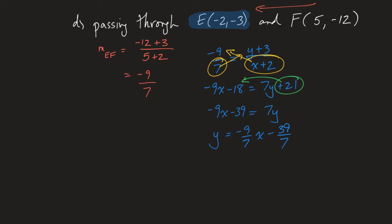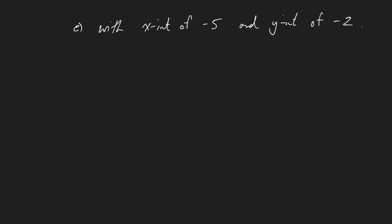I want to tackle one more example, and I'm going to challenge you with a race. Whoever can build the correct equation of the line as fast as possible wins. We're looking for speed. Just make sure your solution would allow the person next to you to understand what you did. Here comes our last problem: build the equation of the line that has an x-intercept of negative 5 and a y-intercept of negative 2. Pause the video and go as fast as you can.